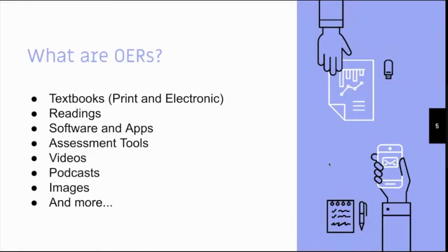Open educational resources, or OERs, include textbooks such as print and electronic materials. It can also include individual readings such as an open access article being used for teaching and learning. It includes open software and applications, assessment tools including things like test banks, videos such as this one, podcasts, images, and many more things.